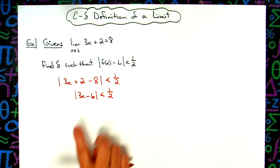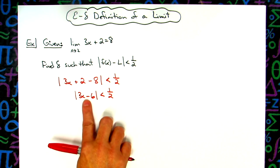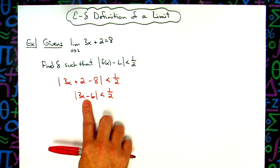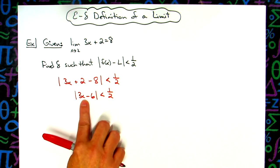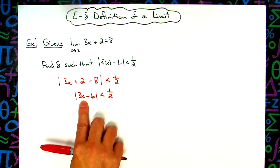All right, now I need to get this simplified down so that I have an x minus two. In this case, I know two because the limit is approaching two. So I need to manipulate this so that I get down to an x minus two.